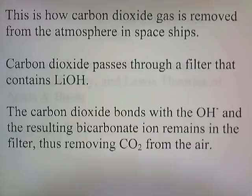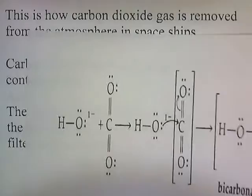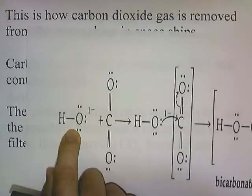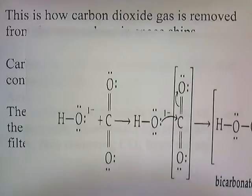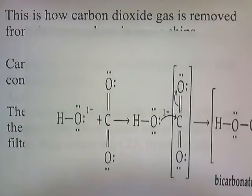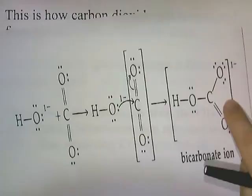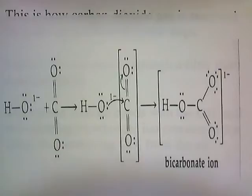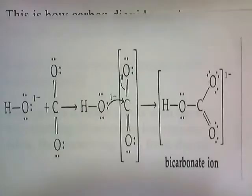This is how carbon dioxide gas is removed from the atmosphere in spaceships: CO2 passes through a filter containing lithium hydroxide, and the carbon dioxide bonds with the hydroxide. The resulting bicarbonate ion remains in the filter, removing CO2 from the air. Lithium hydroxide also absorbs water from the air, and since bicarbonate ion is soluble in water, the bicarbonate dissolves into that absorbed water, effectively removing the carbon dioxide. You may remember the scene in the film Apollo 13 where they had to fix their CO2 filter, because too much carbon dioxide — which is poisonous to the human body — was building up.